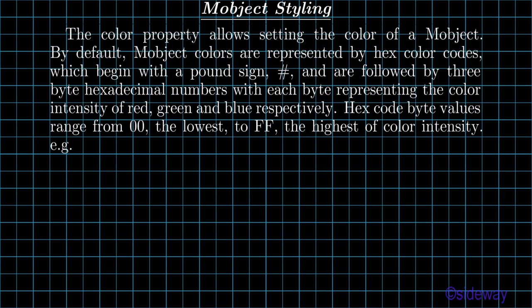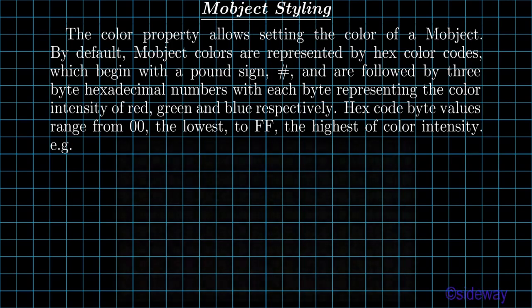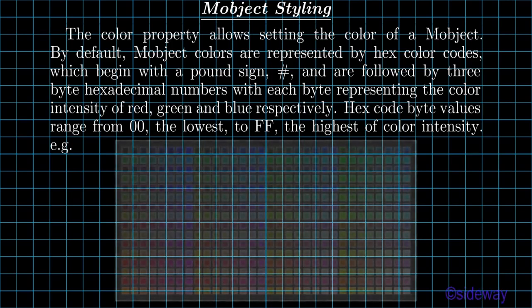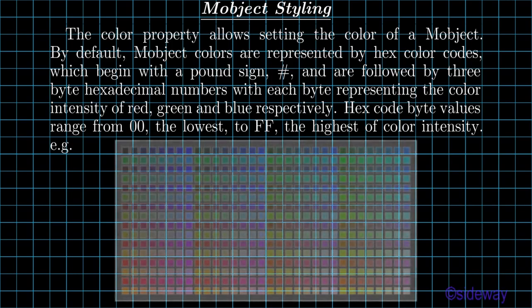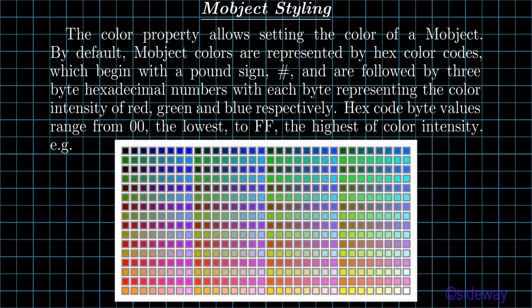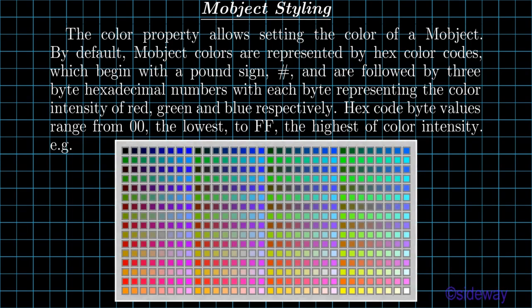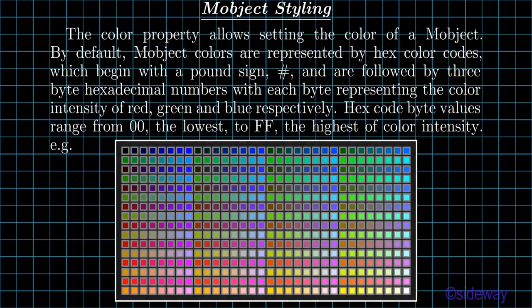By default, mobject colors are represented by hex color codes, which begin with a pound sign and are followed by three-byte hexadecimal numbers, with each byte representing the color intensity of red, green, and blue respectively. Hex code byte values range from 0 (the lowest) to ff (the highest) of color intensity.